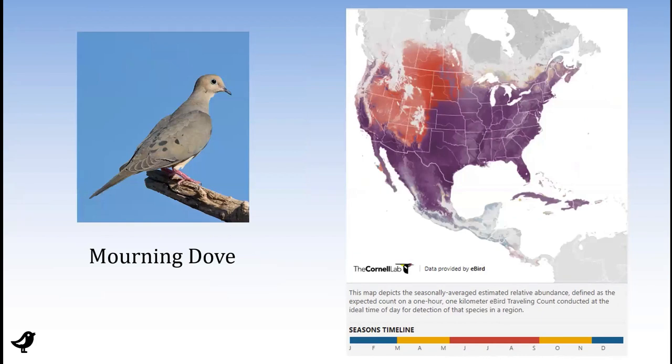Mourning doves are in a similar boat, at least in this part of the world. On the map they're shown as residents right here in the Treasure Valley, but mostly leaving — that is, breeding but leaving most of the west. Some years you may have a lot of mourning doves, and some years hardly any. My hunting friends have always said that as soon as hunting season opens, the mourning doves leave the day before hunting season opens. I don't know if that's true.